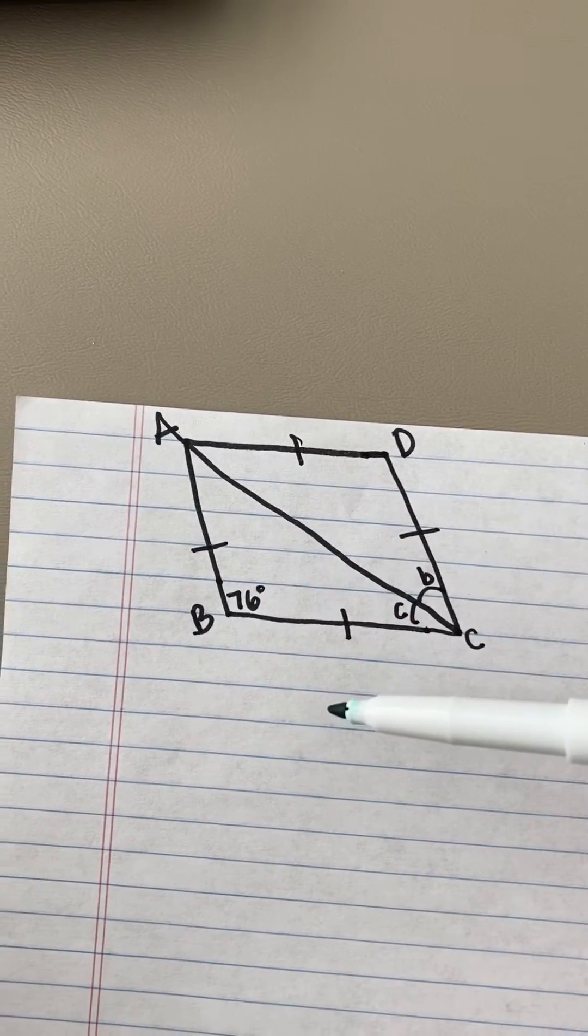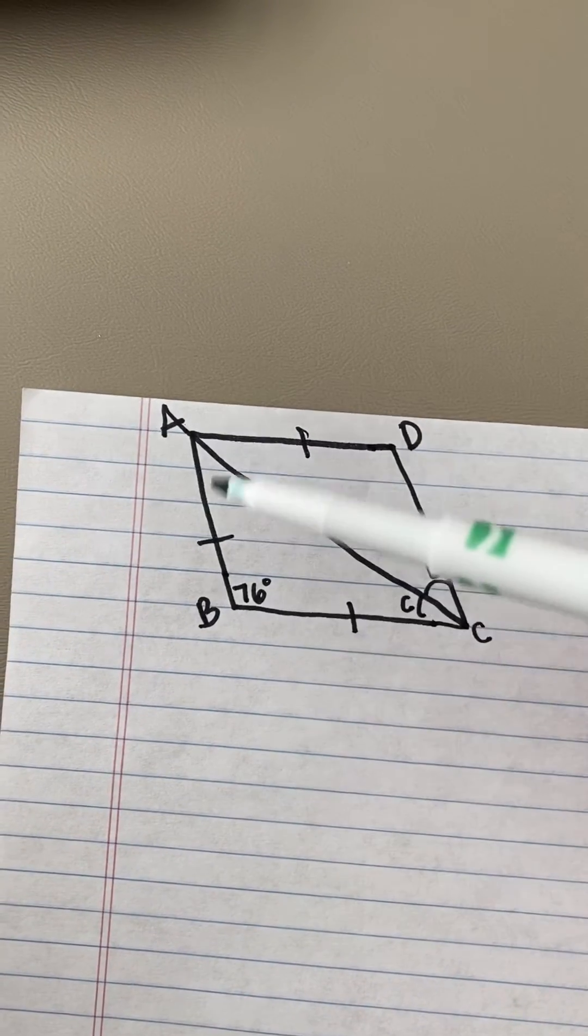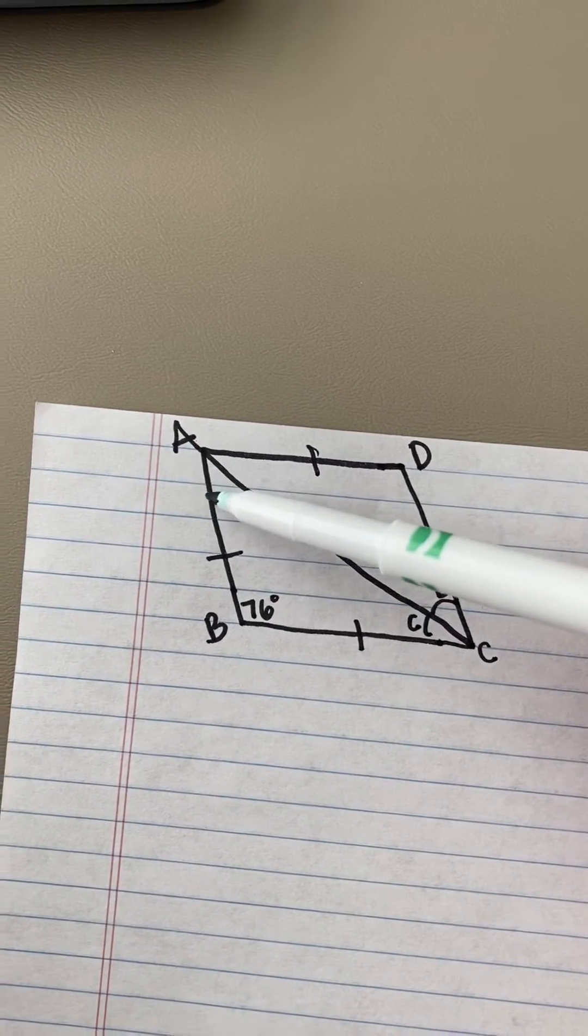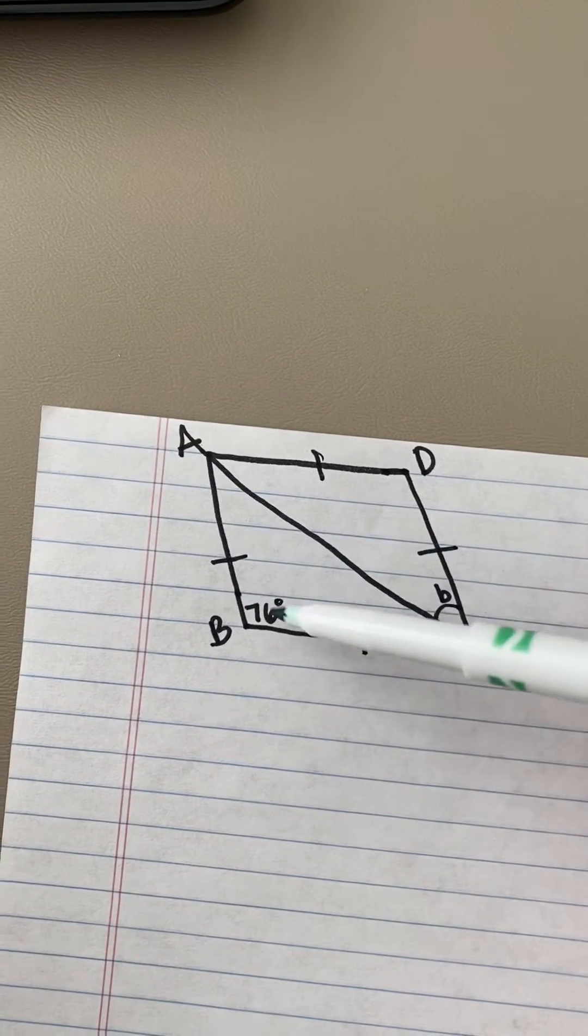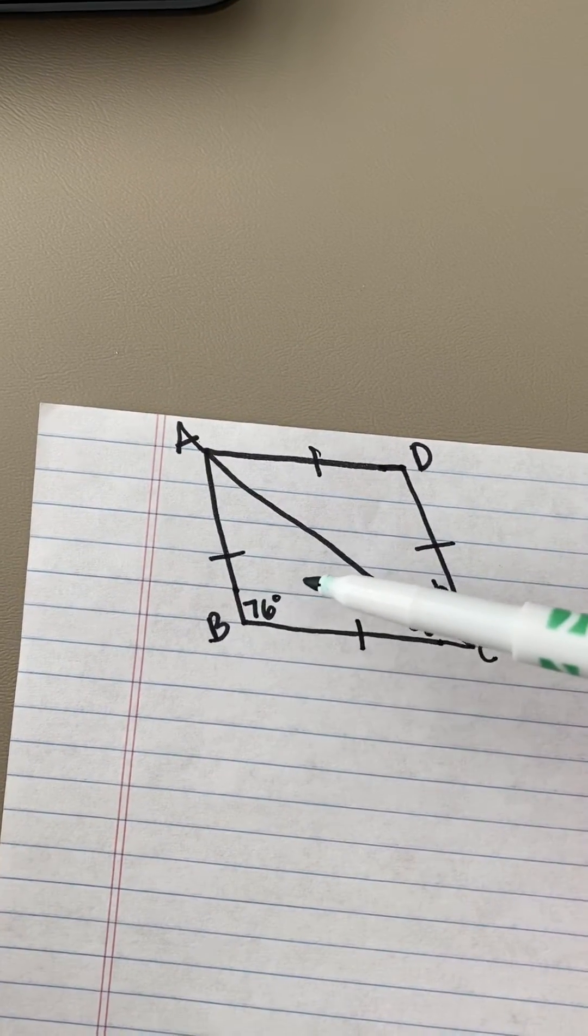Another property of parallelograms that rhombuses have are that the angles between the parallel sides have a sum of 180 degrees.